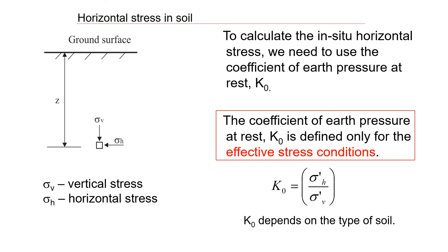In the field, soil mass experiences two stresses acting perpendicularly: vertical stress and horizontal stress, denoted sigma h. Once we know the vertical stress, we can estimate the horizontal stress using the coefficient of earth pressure at rest, K0, defined as effective horizontal stress divided by effective vertical stress. Always use effective stress conditions when applying K0.